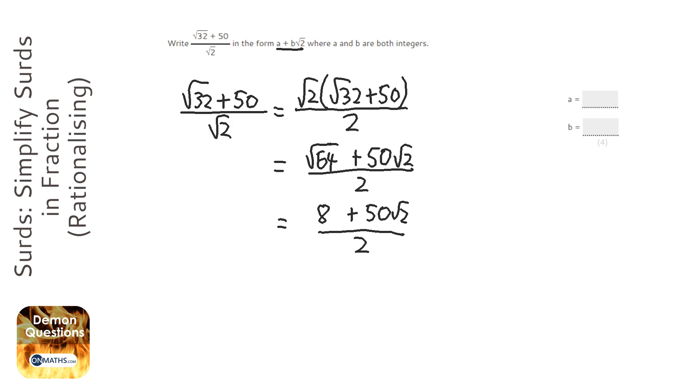Now be careful here. If there's multiple terms at the top, which there are, you've got to divide everything by 2. So that's going to be 1. That's going to be 4. And then 50 root 2 is just going to be 25 root 2. So that is 4 plus 25 root 2.